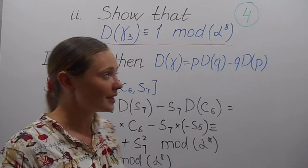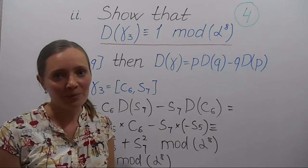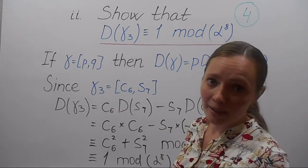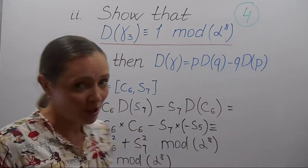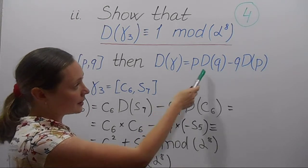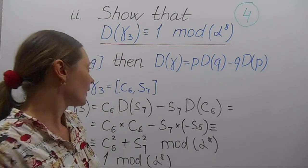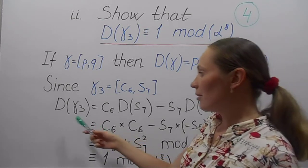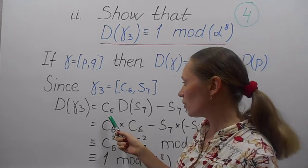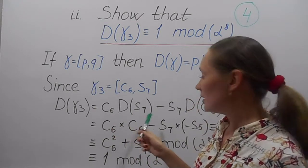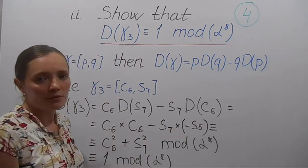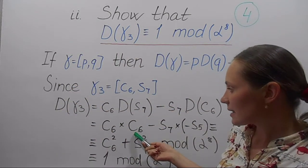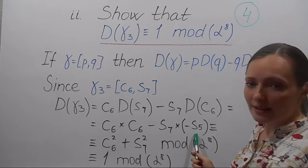The next part of the problem is to show that the area differential of the curve γ3 is congruent to 1 mod α8. If the parametrization of γ is (p, q), then the area differential can be calculated by the formula p times the derivative of q minus q times the derivative of p. In our case, γ3 has its specific parametrization, so the area differential is C6 times the derivative of S7 minus S7 times the derivative of C6. The derivative of S7 is C6 and the derivative of C6 is minus S5.